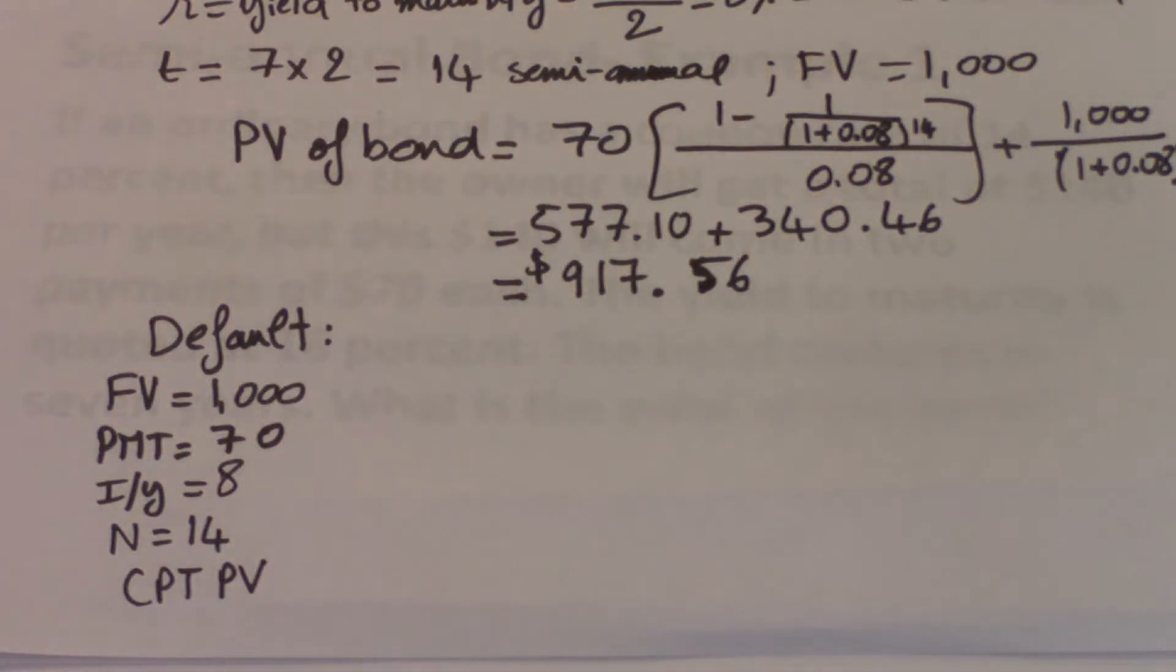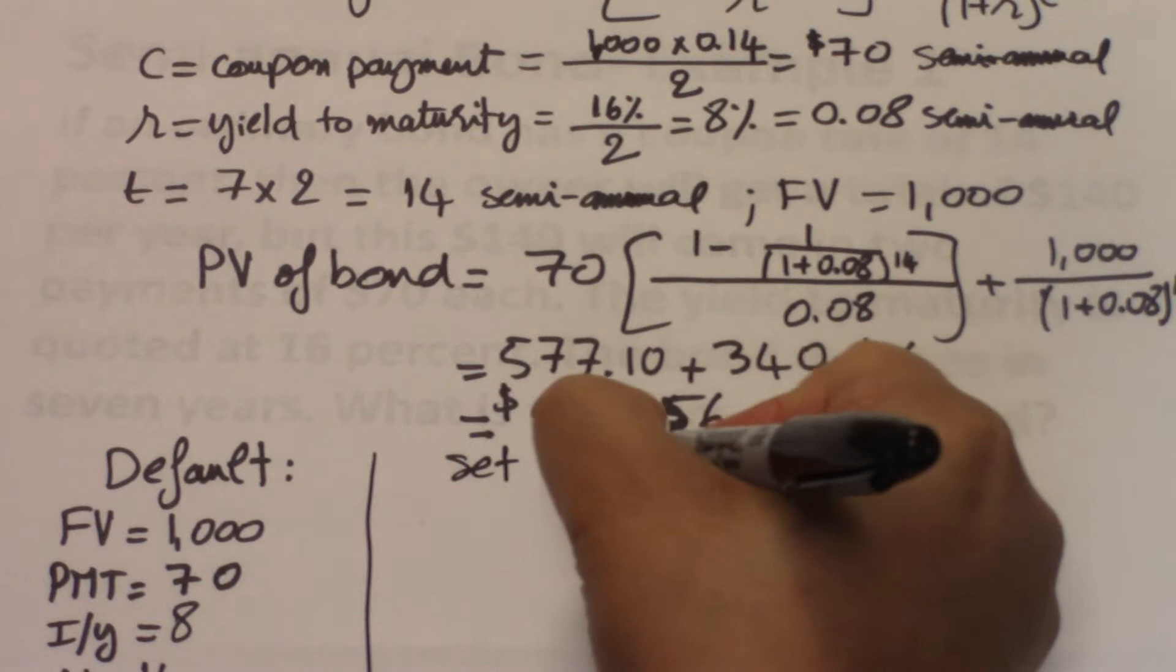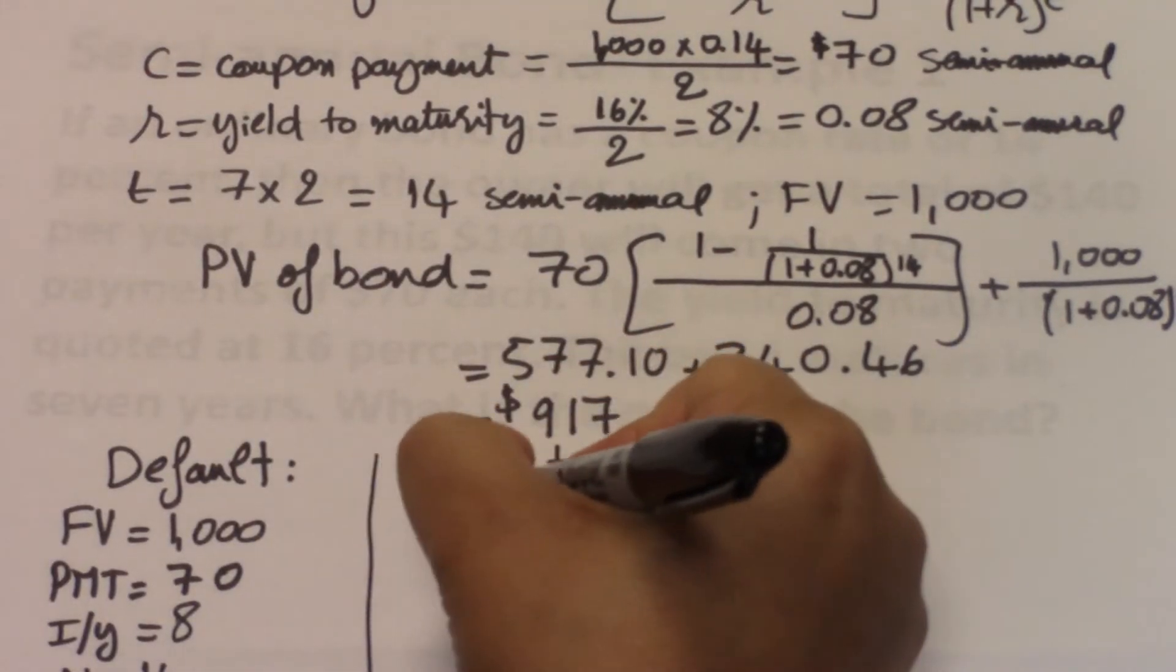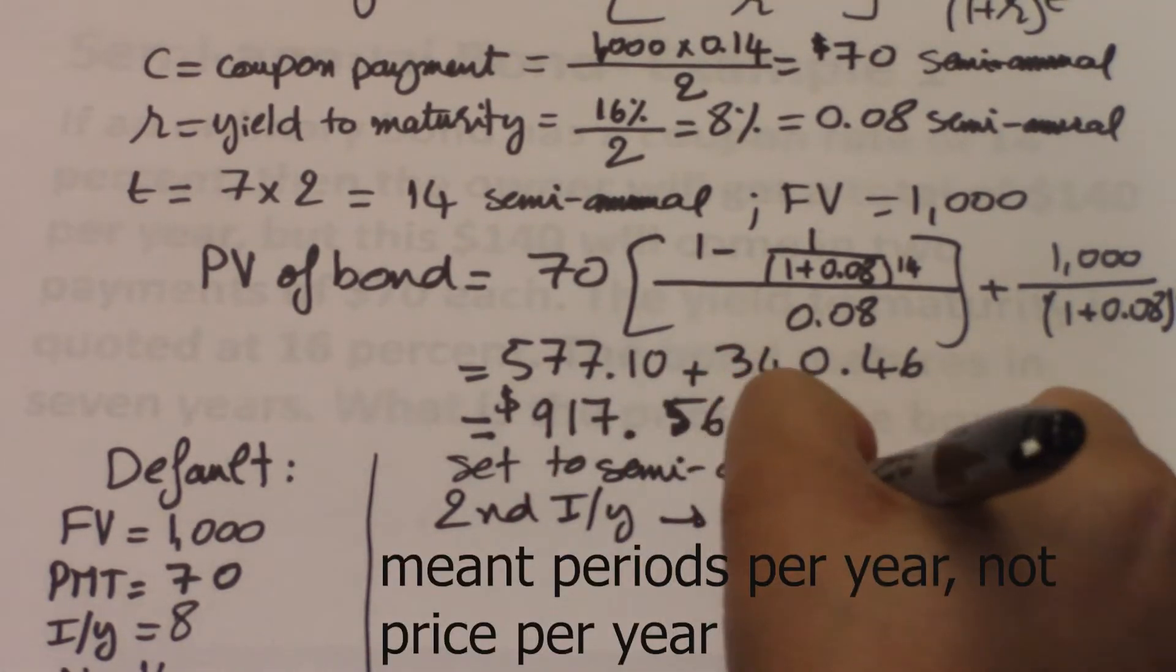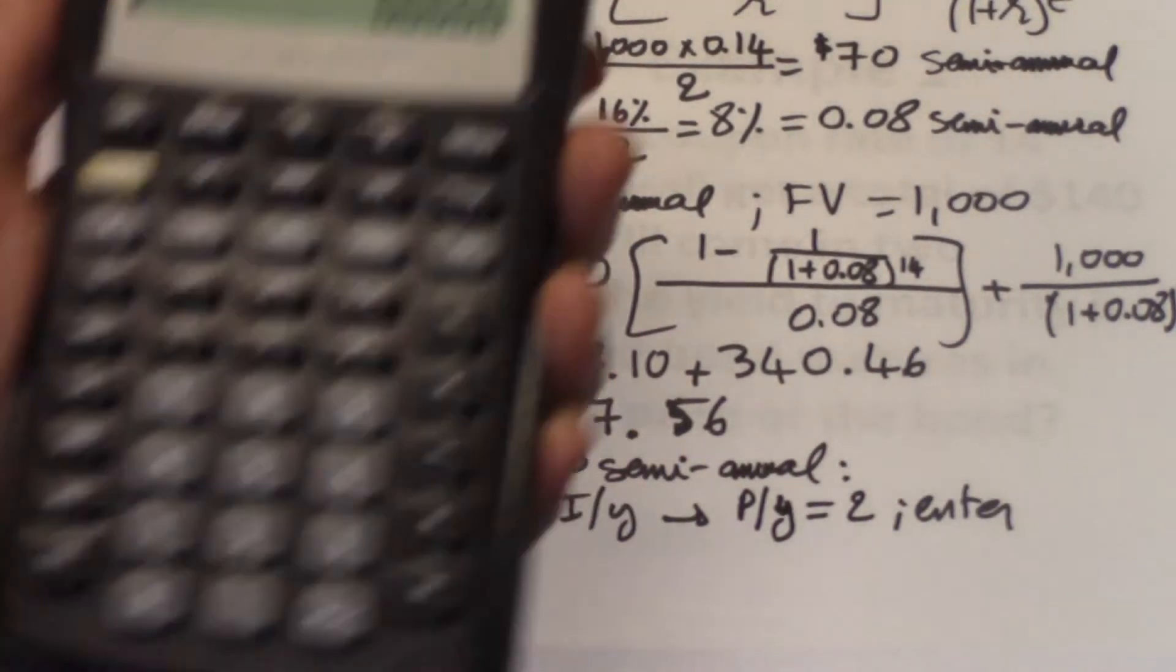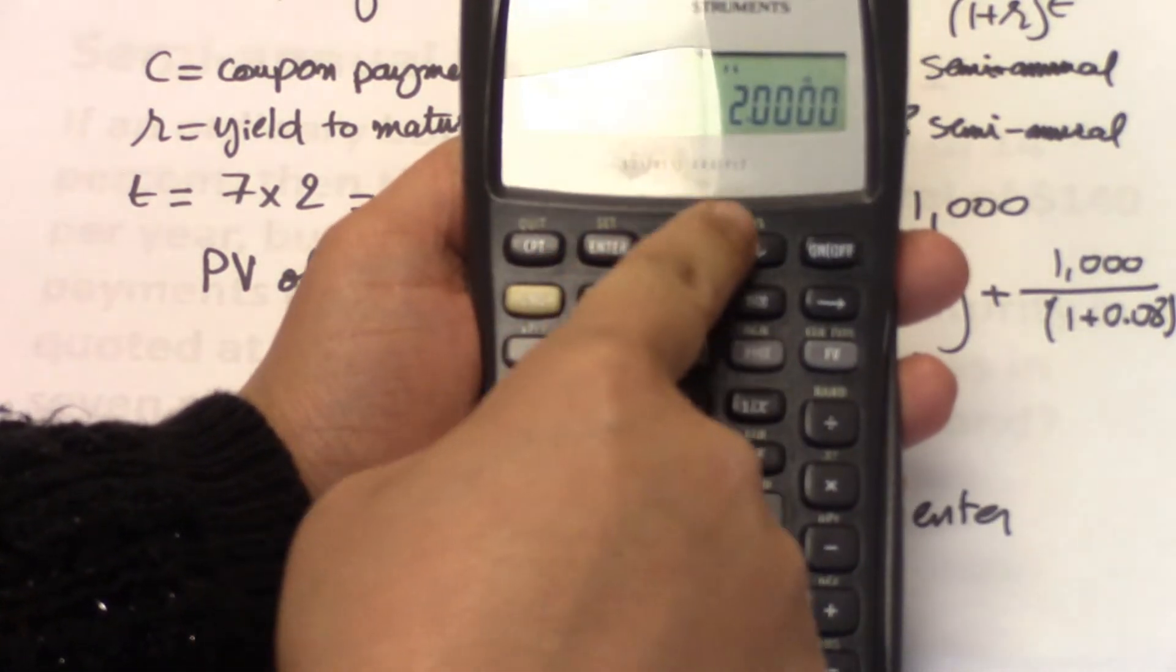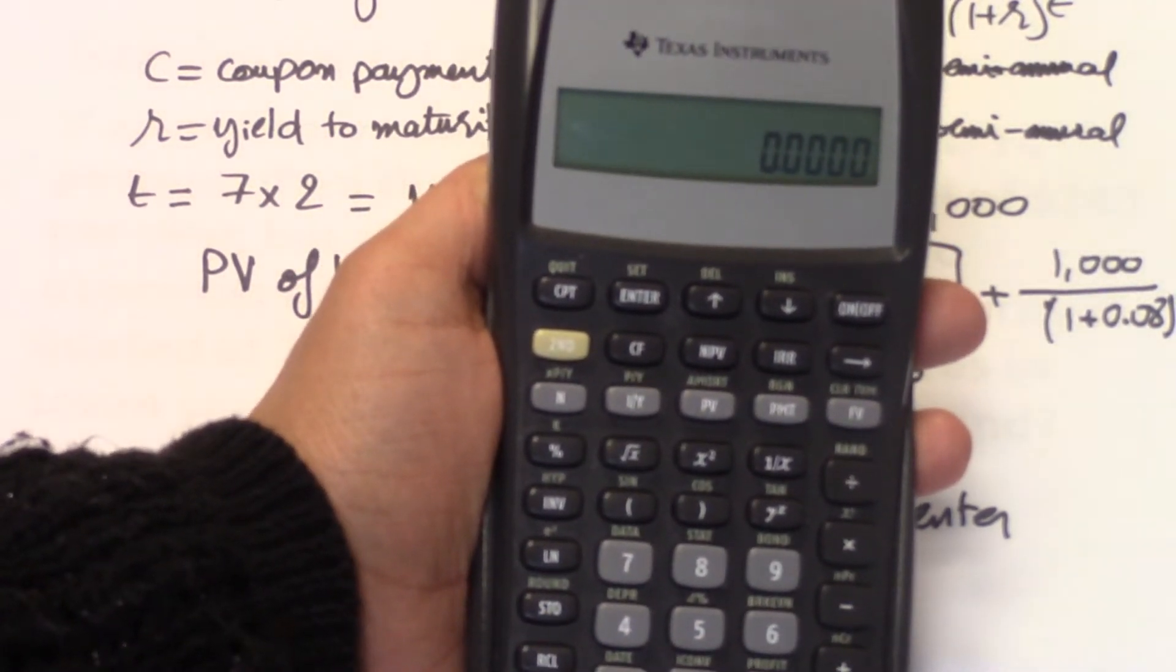You can also set the calculator to semi-annual. So to set to semi-annual, this is what you need to do. You do second I over Y. And then you're going to be asked for the periods per year. You do two. And then you hit enter. So we go to the calculator. So second I over Y, periods per year is two, enter, down arrow, exit. So that means that the calculator is set to the semi-annual mode.